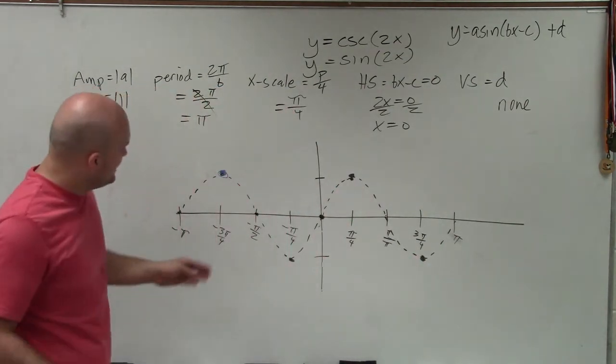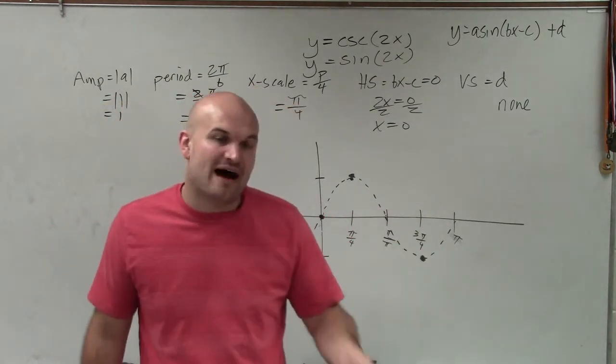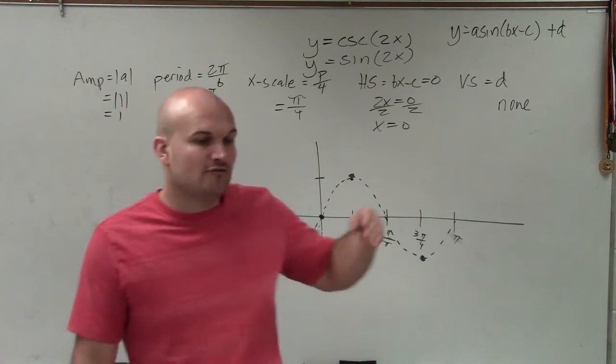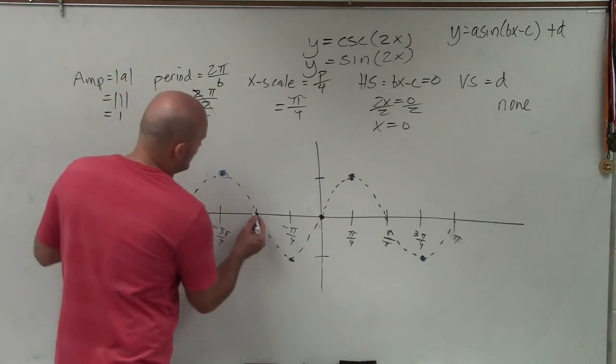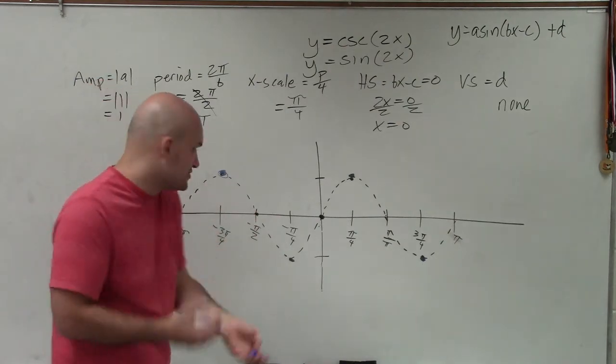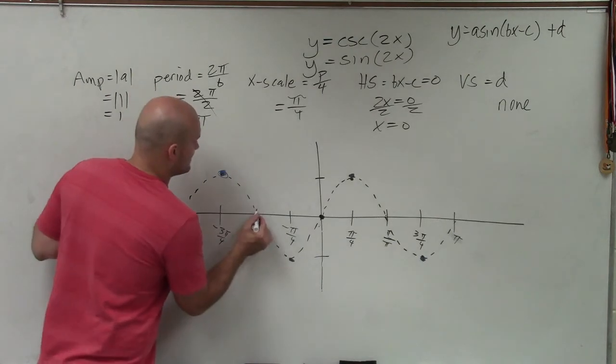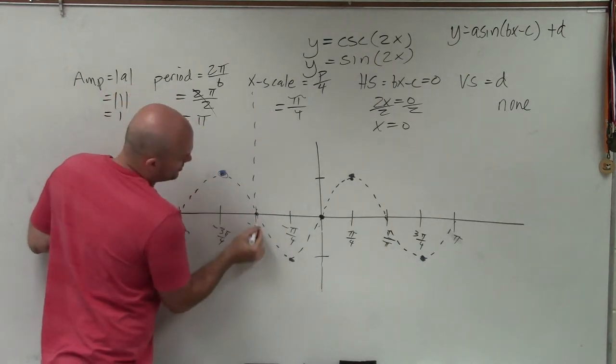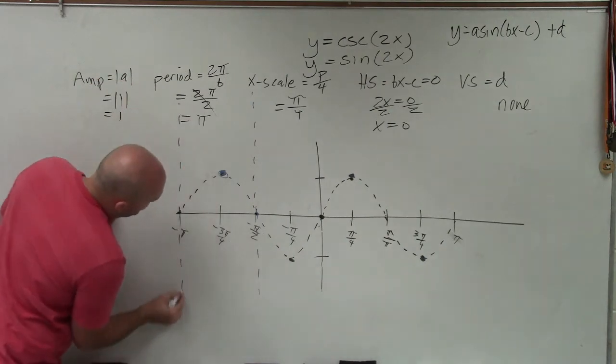The next thing is, at each x-intercept, that is actually undefined. So for every x-intercept for cosecant, or for sine, that's going to be undefined for cosecant. Because remember, we're reciprocals of each other. So if 1 equals 0, then you flip it, then it's going to be 0 in the denominator, which will be undefined. So I'm going to apply asymptotes at every x-intercept.